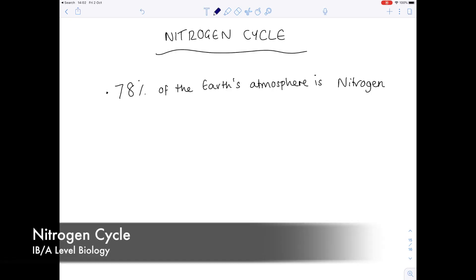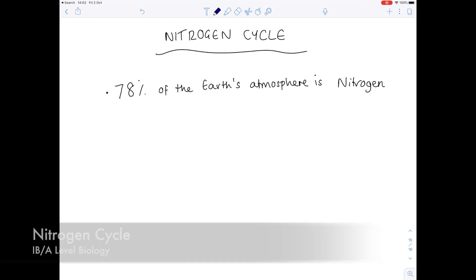This A-level IB biology video is on the nitrogen cycle. I started out by making the statement that the earth's atmosphere is 78% nitrogen. So we know there's a huge amount of nitrogen around, but how can we actually use that nitrogen? How can it become a part of living organisms?